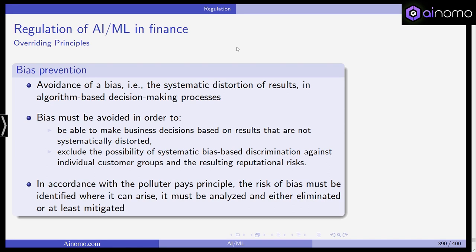One should also prevent bias — the systematic distortion of results in algorithm-based decision-making processes must be avoided in order to make business decisions that are not systematically distorted and to exclude the possibility of bias-based discrimination against certain customer groups. Importantly, if there are ethical concerns within AI and ML in a financial institution, this might cause reputational risk and damage to the company's reputation — which then becomes a concern for the regulator. In accordance with the polluter-pays principle, the risk of bias must be identified where it arises, analyzed, and either eliminated or at least mitigated.